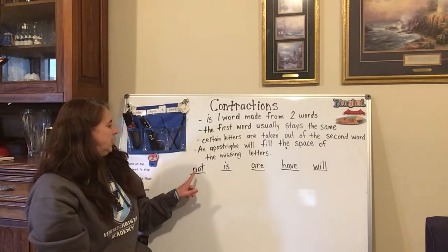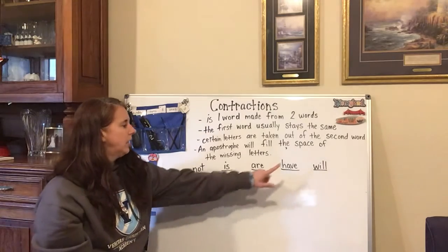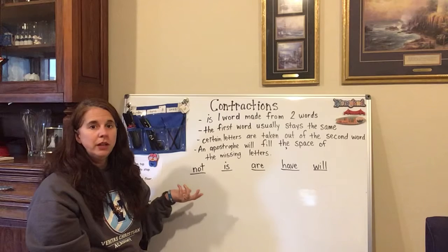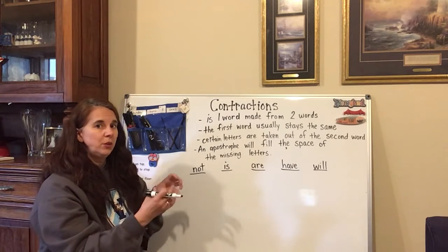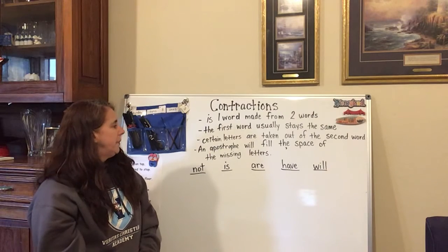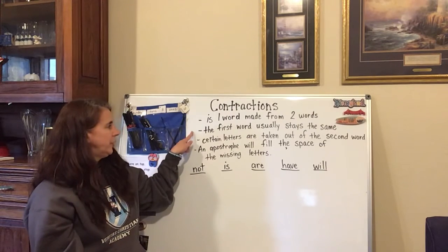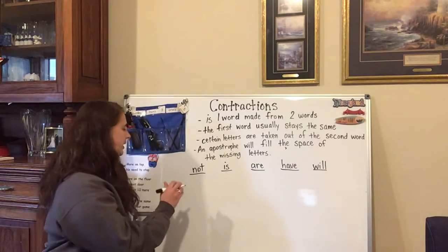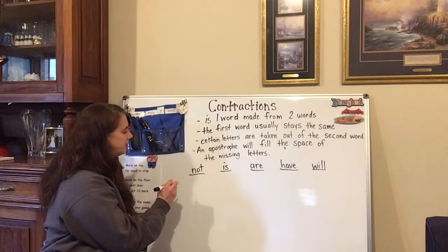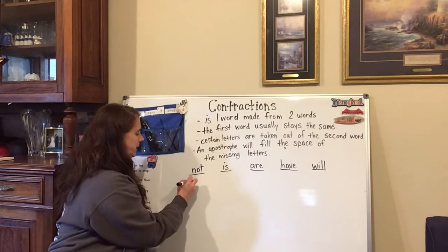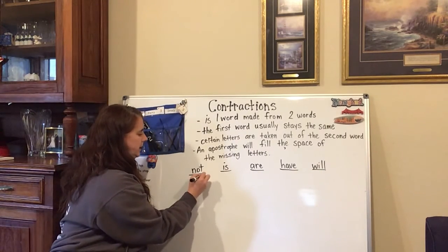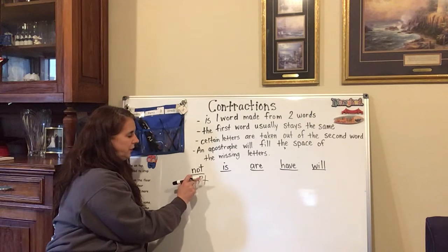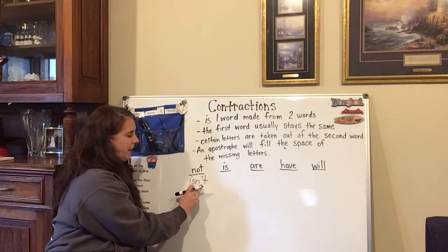We have 'not,' 'is,' 'are,' 'have,' and 'will' — these are the second words that are going to change a little, because the first word usually stays the same. Let's do some examples for 'not.' We have 'is' and 'not,' and we'll make the word 'isn't.' Notice how 'is' stays the same, but this apostrophe is taking the place of the O in 'not' — isn't.